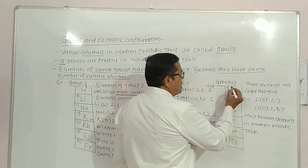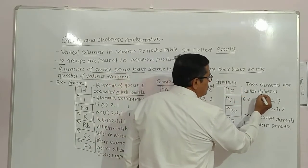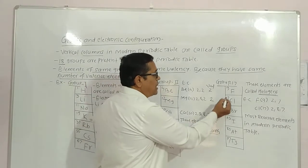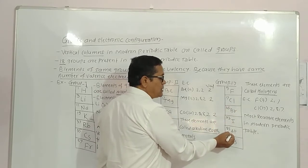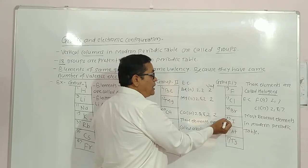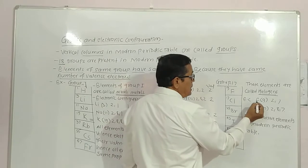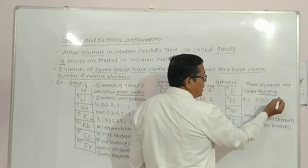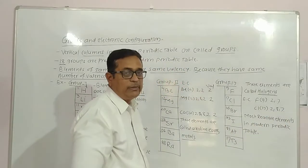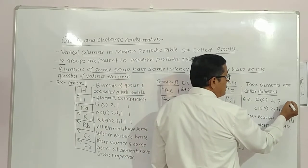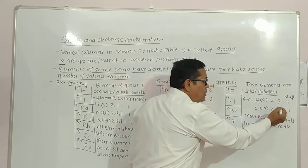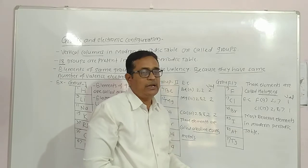Group 17 elements are called halogens — the most reactive elements in the Modern Periodic Table. They are: fluorine (atomic number 9), chlorine (17), bromine (35), iodine (53), and astatine. Fluorine: electronic configuration 2, 7. Chlorine: electronic configuration 2, 8, 7. These elements are the most reactive and have a gaining valence of 1, because they require 1 electron to complete the octet in their outermost shell.